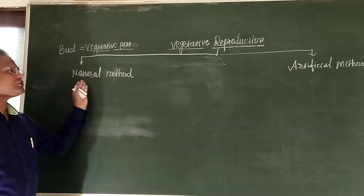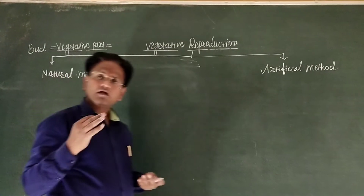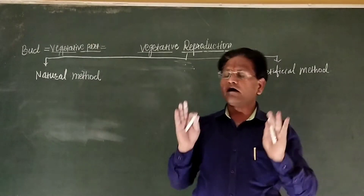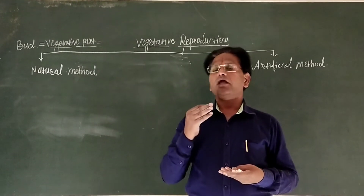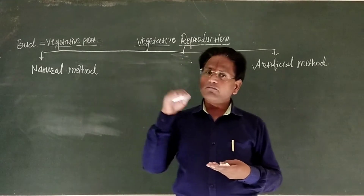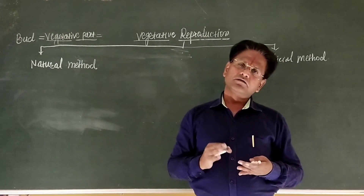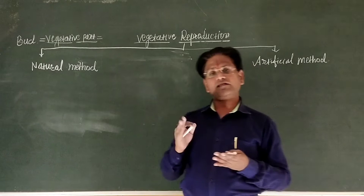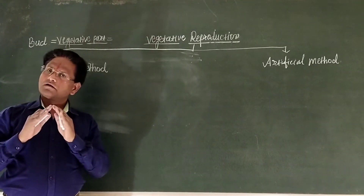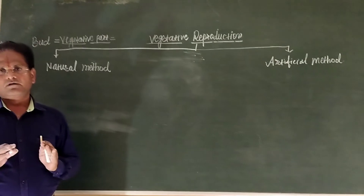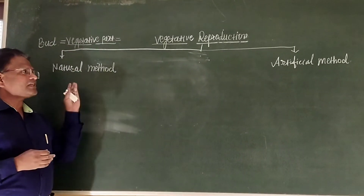What is meant by natural and artificial? In the natural method, young ones are produced from any vegetative part of the plant body without the involvement of man-made activities or techniques. Such type of reproduction is known as the Natural Method of Vegetative Reproduction.